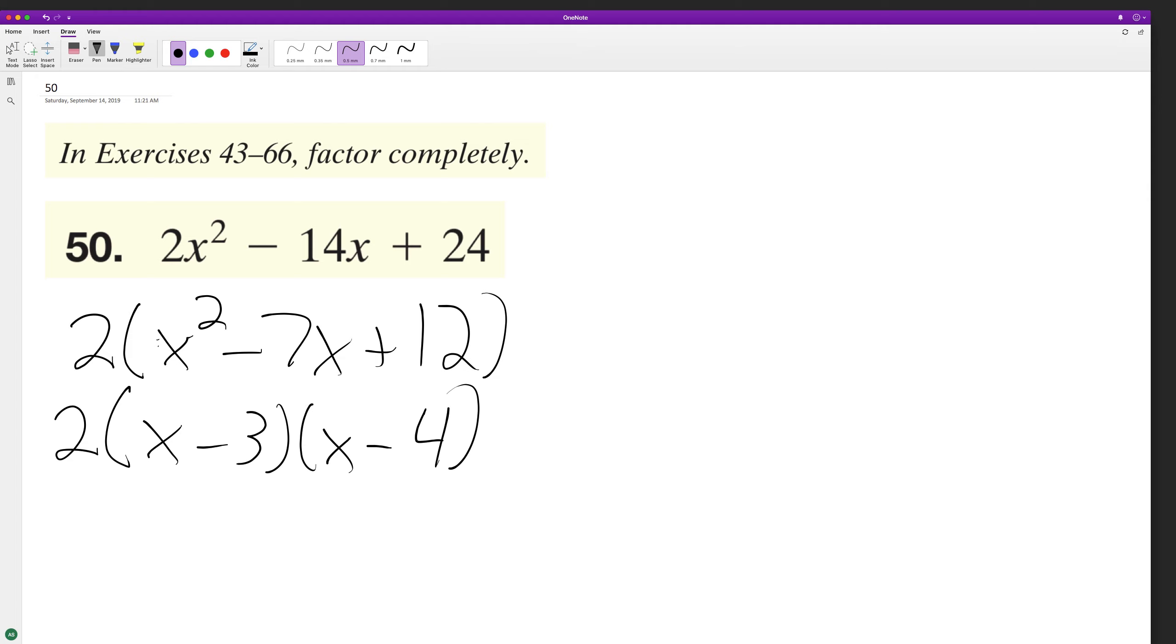This is the correct factorization, pretty sure anyway. Let's multiply it back together. We end up with x squared minus 4x minus 3x plus 12. And then combine like terms, we get minus 7x.